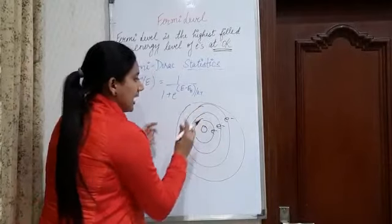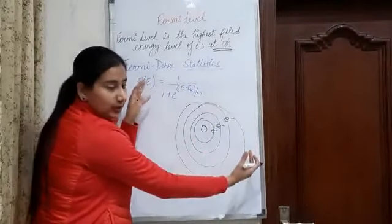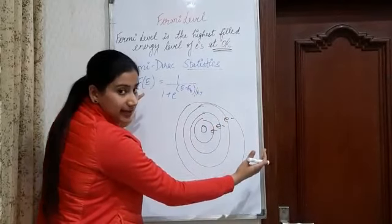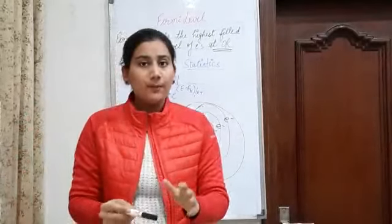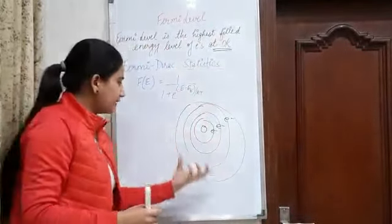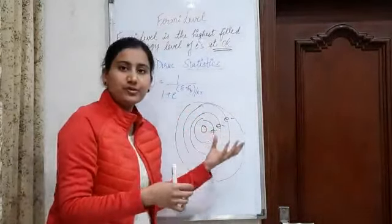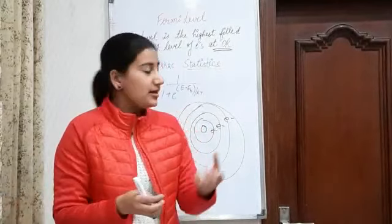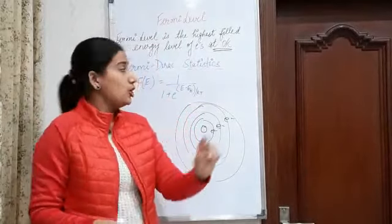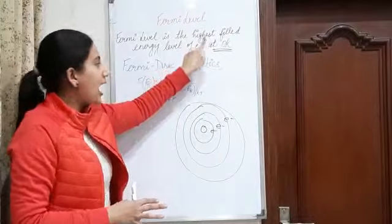As the energy level is farther from the nucleus, the more energy it has — meaning electrons have more energy in outer levels. So the highest filled energy level is the Fermi level. But at room temperature there is always thermal agitation and movement of electrons, so we measure this at zero Kelvin, where we consider there is no movement. Therefore, Fermi level is the energy level which is completely filled and it has to be the highest completely filled energy level at 0 Kelvin.